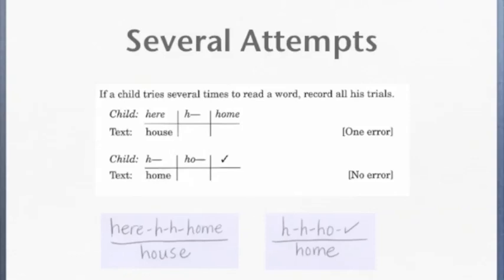Sometimes a child will attempt a word several times, either by trying different words or sounding it out. It is important to record all of the student's behavior, as they are a window into seeing how the child is processing at points of difficulty.